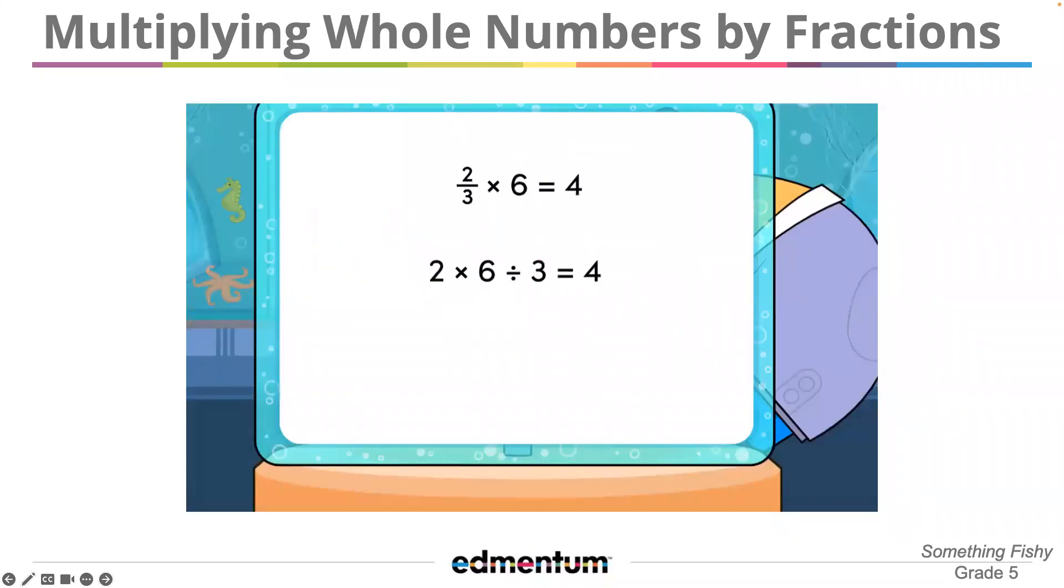Finally, students are presented with the abstract representation without any models. To find the product of two-thirds times six, multiply the numerator, two, by the whole number, six, and then divide that product by the denominator, three, to get the answer. Two-thirds times six is the same as two times six divided by three, which equals four.